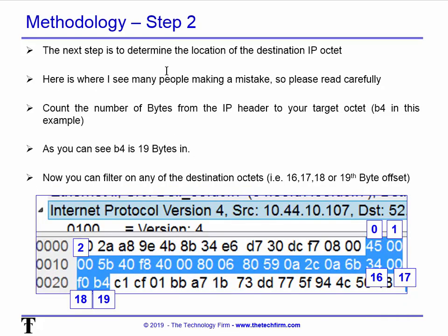Now step two: we have to figure out where this is in the IP header. This is where people get lost, because they start counting offsets from the beginning of the packet at zero — but that's not the case. This is an IP offset, so it's in the IP header, and that's where you have to start counting from. You can see that 45 is position zero, then one, two, three, four, five, all the way down to 16, 17, 18, 19. Those last four bytes correlate with the actual IP address. So depending on what you want to accomplish — if you wanted the first octet you'd use position 16, but here we want position 19 for the last octet.